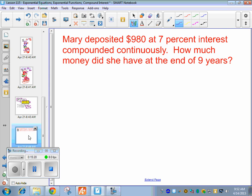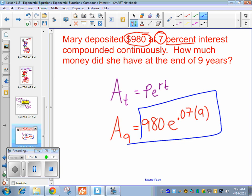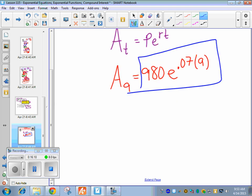So Mary deposited $980 at 7% interest, compounded continuously. How much money did she have at the end of 9 years? So first thing is the PERT formula. Where do we plug 980 in? P. So we want to know after 9 years. So A sub 9. We plugged in $980, our initial investment. So 7% is what decimal? 0.07. And then the time is 9 years. For this one, plug this whole thing in. You don't have to store anything. You can plug it all in at one time. And since it's money, how many places are we going to round our decimal? Two. $1,840.06.